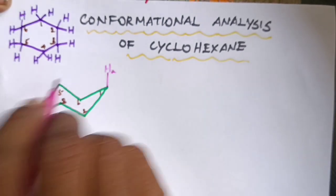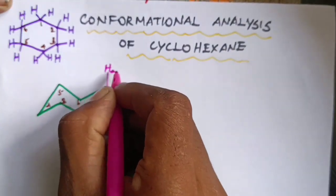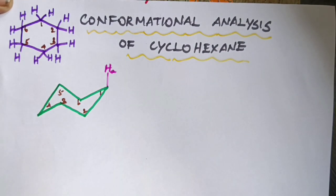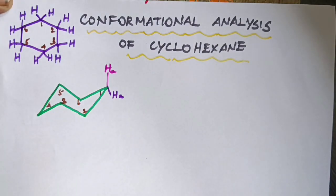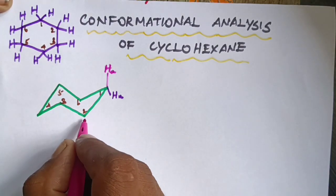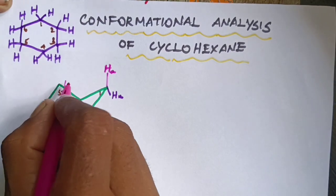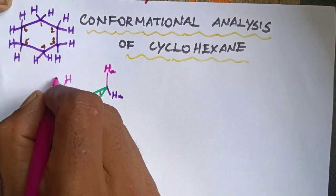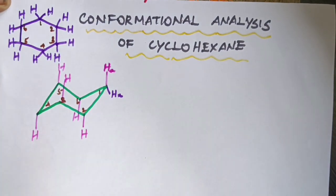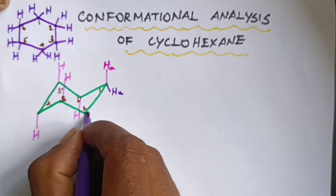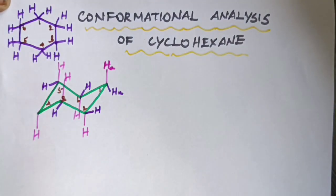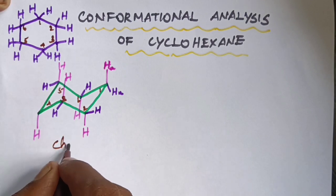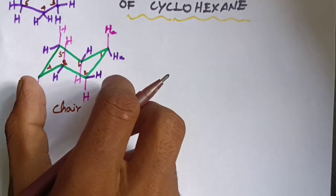Axial hydrogen is labeled HA. Every carbon has one axial hydrogen and one equatorial hydrogen, labeled HE. This is the chair conformation — every carbon has an axial hydrogen and an equatorial hydrogen.